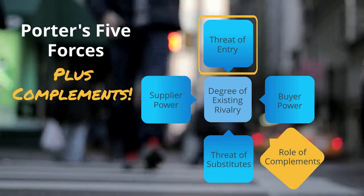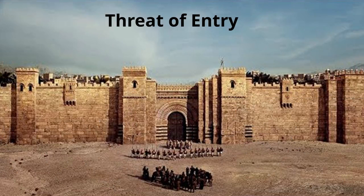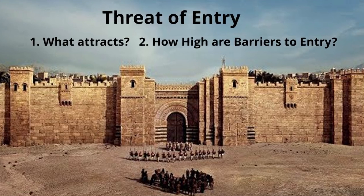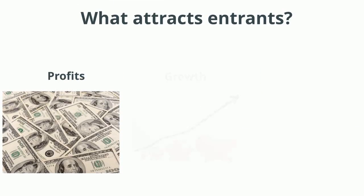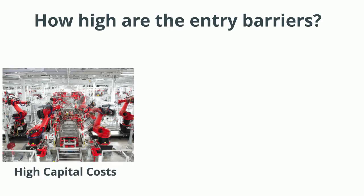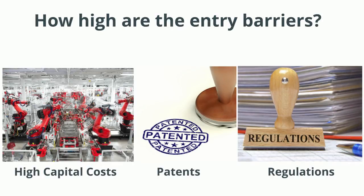Now let's talk about threat of entry. To assess the threat of entry, we have to look at two main things: first, what attracts entrants to the industry, and second, how high are the barriers to entry? If the industry isn't attractive, you don't really need entry barriers. But if the industry is really attractive, the barriers will make a big difference. Things that attract potential entrants include profits, growth, and intrinsic sex appeal. Barriers to entry include things like high upfront capital costs, patents, and government regulation.